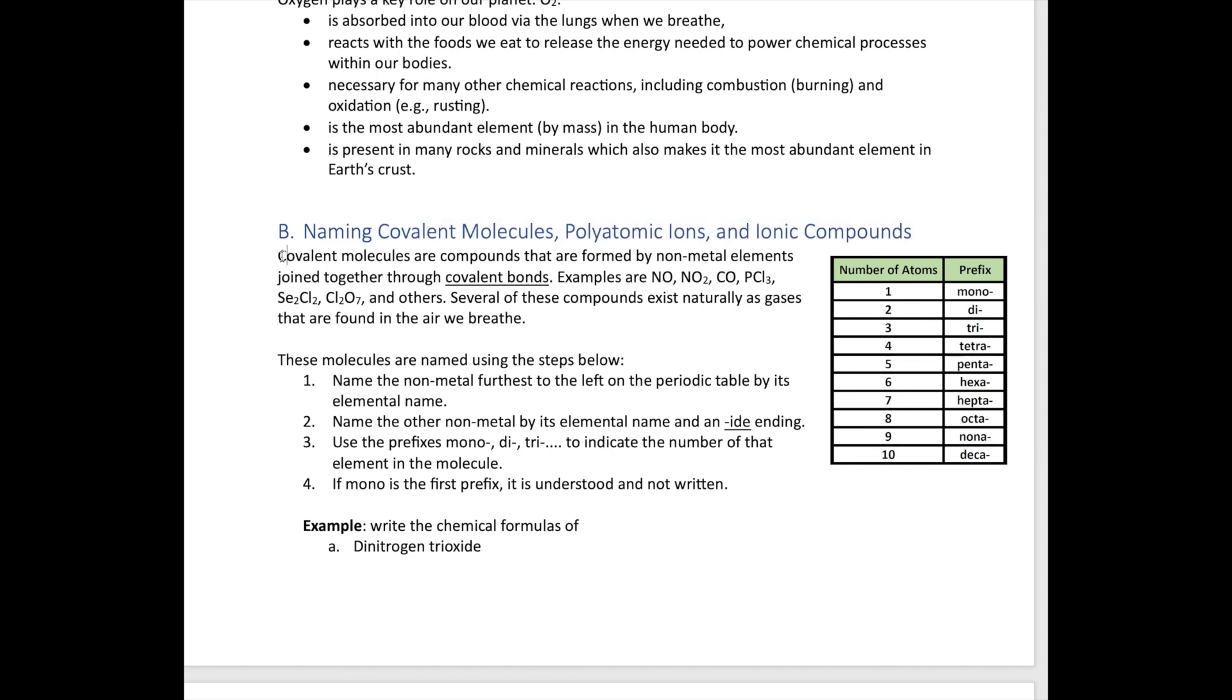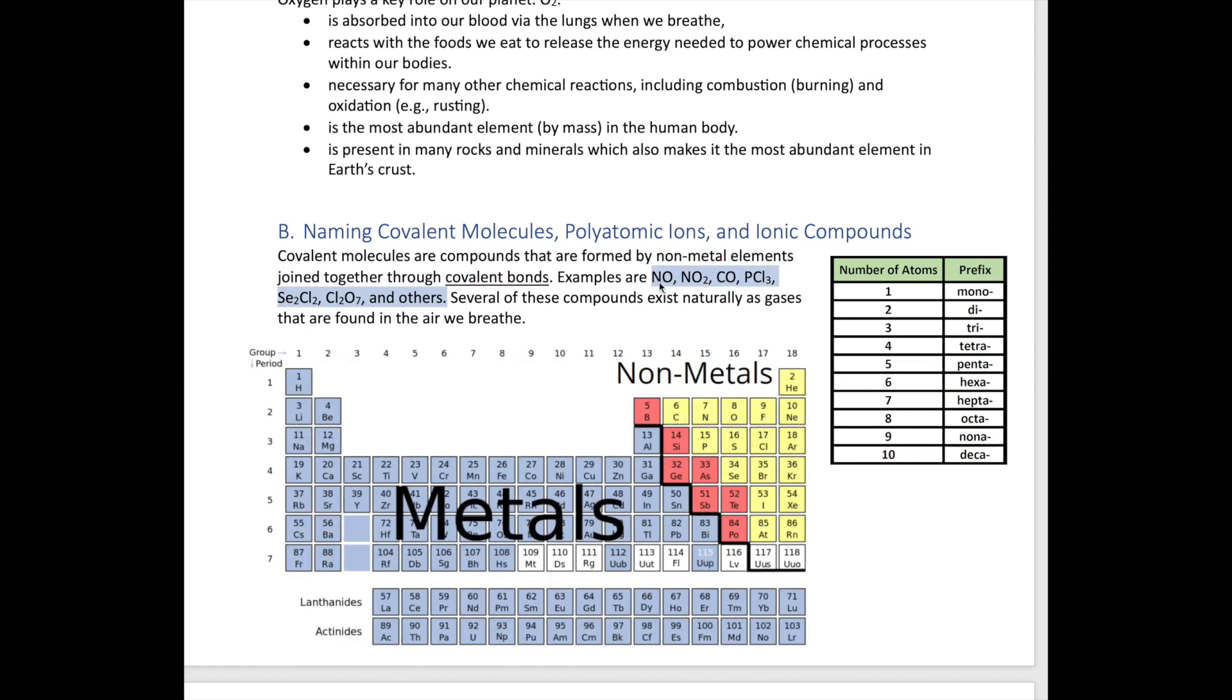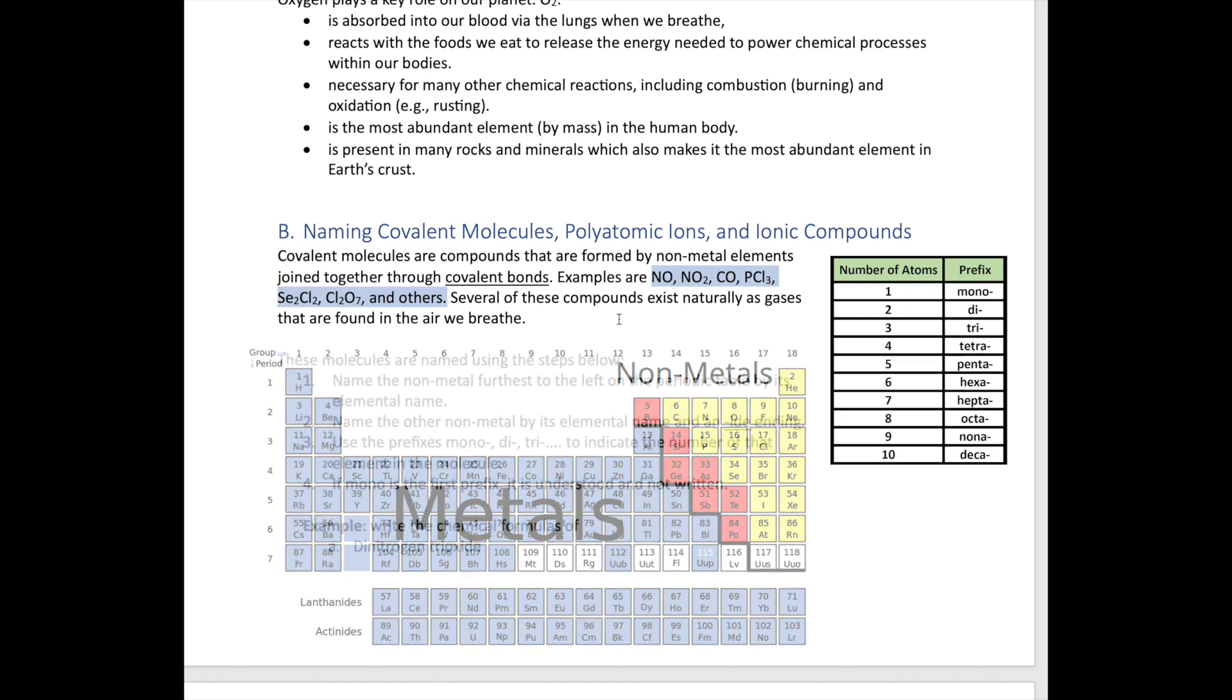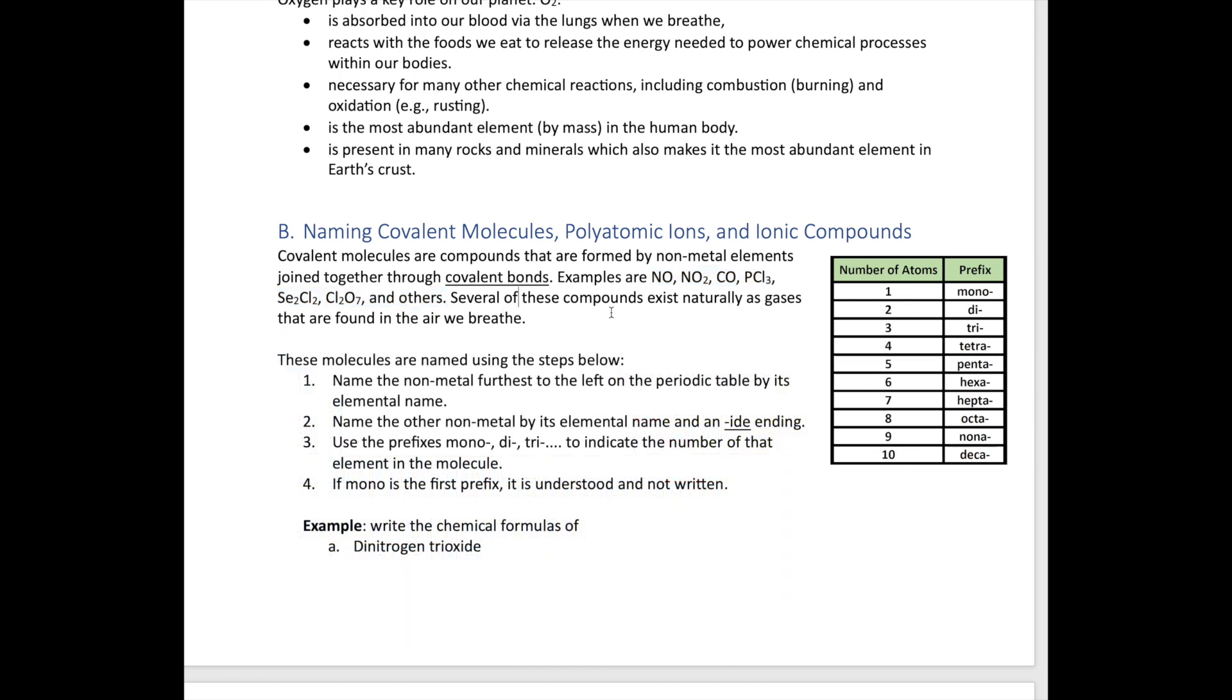So we're going to start with something called covalent molecules. Those are compounds that are formed by non-metal elements, and they're joined together using covalent bonds. These are some examples here. As you can see, they're all non-metal, so they're all on the right side of the periodic table. Like phosphorus, oxygen, nitrogen, selenium, and so on. Many of these compounds exist naturally as gases in the air, and that's the reason why we care about them in this chapter, because we want to know what their roles are in air.